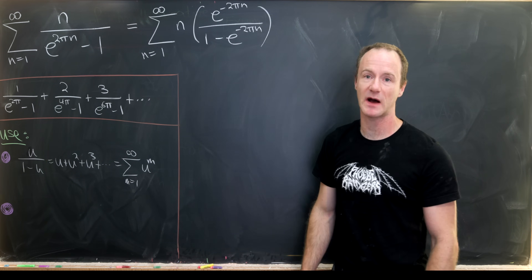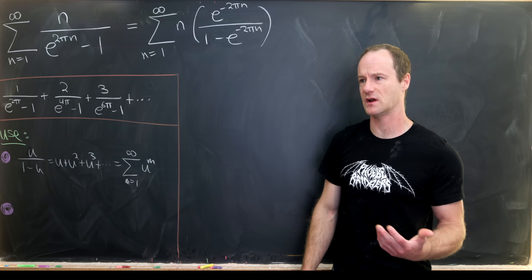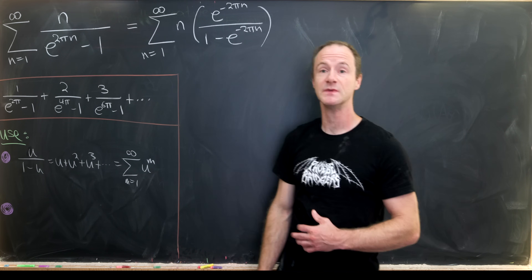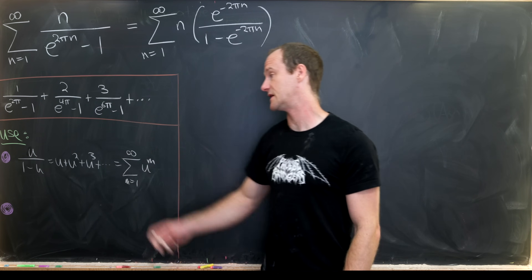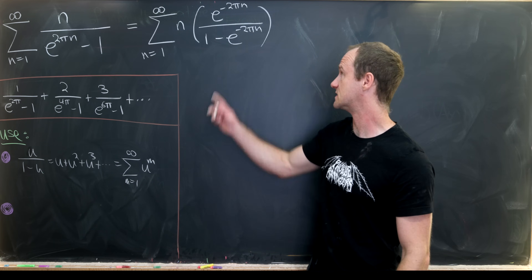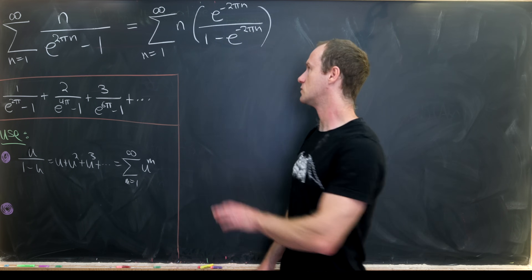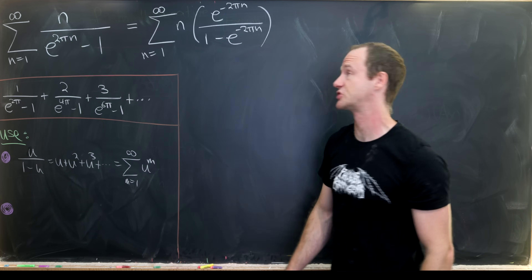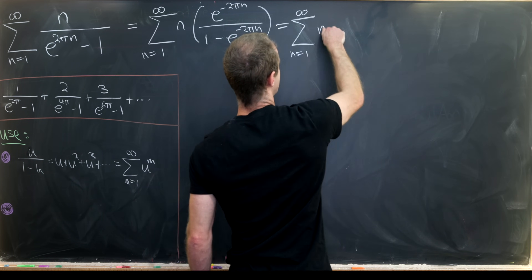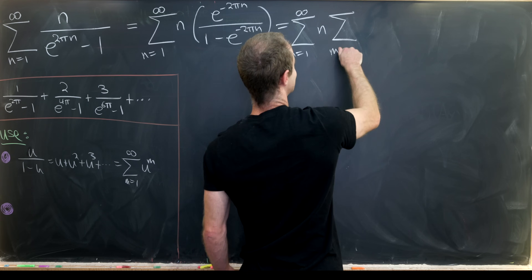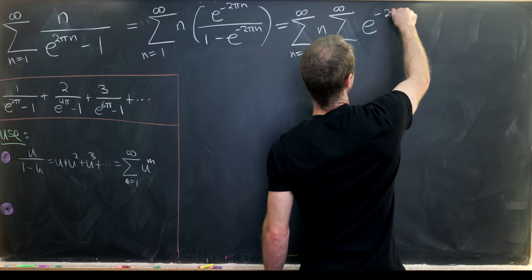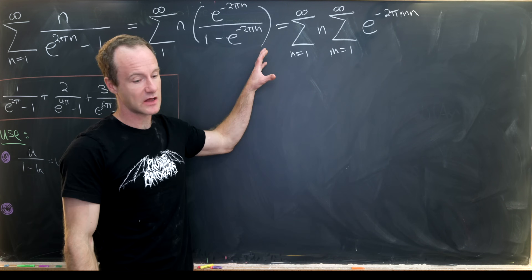Now e to the minus 2πn is always positive and less than 1 for all values of n, so it can appropriately be expanded as a geometric series with common ratio e to the minus 2πn. Expanding using our first tool gives the sum as n goes from 1 to infinity of n times the sum as m goes from 1 to infinity of e to the minus 2πmn.